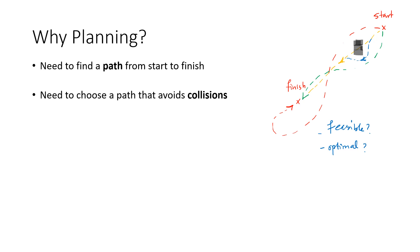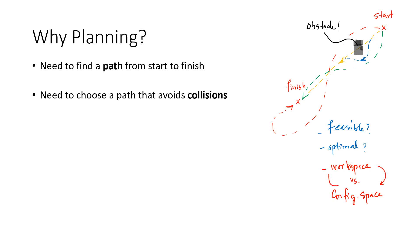The issue with obstacles is that they are going to be defined in the workspace. But the robot has the constraint that it is going to only understand its own configuration. So you need to separate the notion of workspace from configuration space. If something is defined in the workspace — like obstacles or aspects of the task — how are you going to map onto the configuration space and jump back to the workspace? That is an important aspect to be considered in this planning exercise.